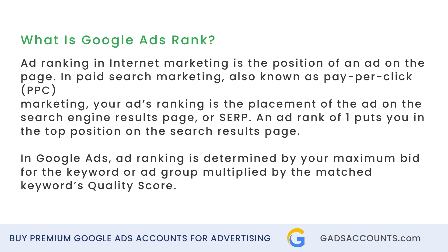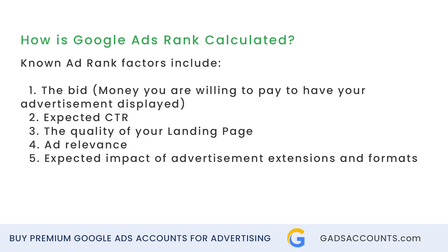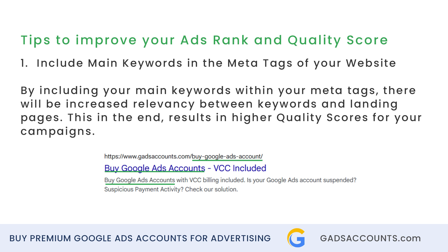So how is Google Ads rank calculated? Known ad rank factors include the bid, expected CTR, the quality of your landing page, ad relevance, and the expected impact of advertisement extensions and formats.